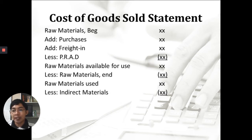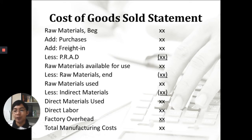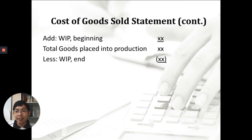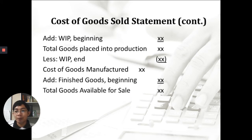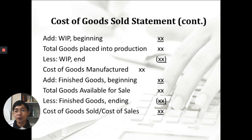Raw materials are composed of direct and indirect materials. Indirect materials go to factory overhead, so you deduct indirect materials from total raw materials to arrive at direct materials used. Then you add direct labor and factory overhead to get total manufacturing costs. Add work in process beginning to get total goods placed into production, deduct work in process ending to get cost of goods manufactured. Add finished goods beginning for total goods available for sale, then deduct finished goods ending to arrive at cost of goods sold, also known as cost of sales.